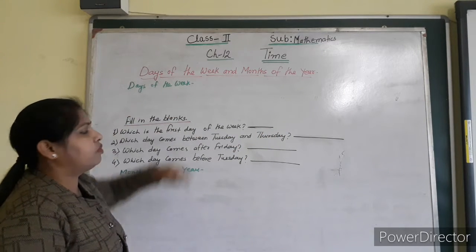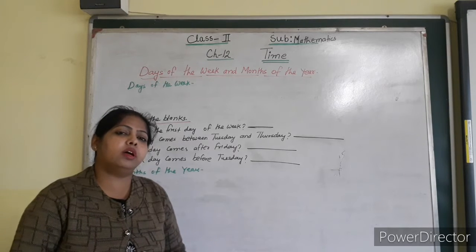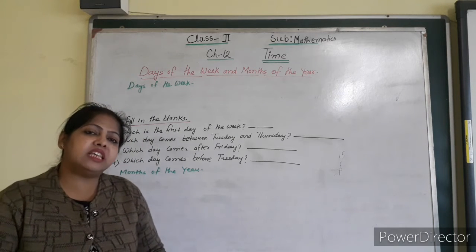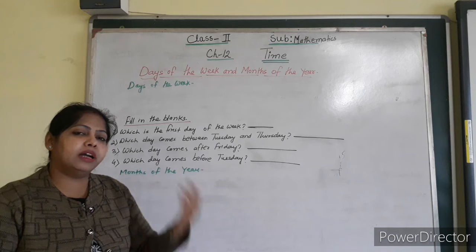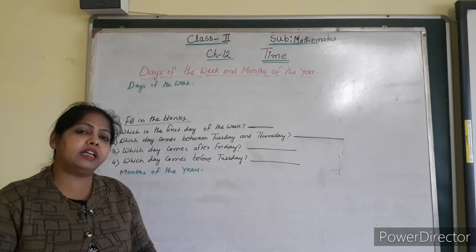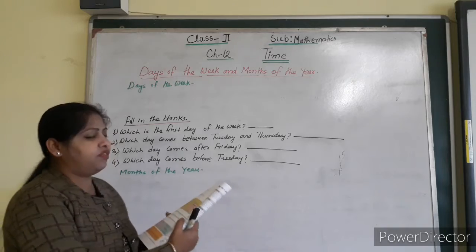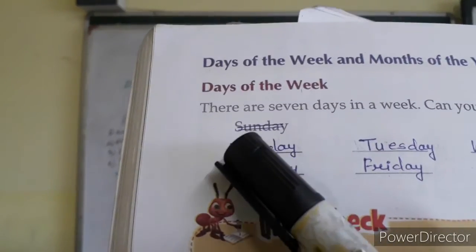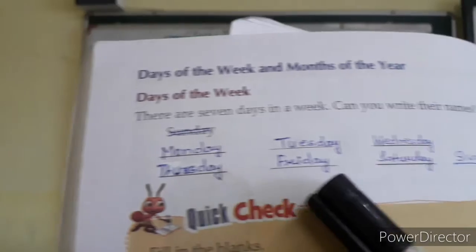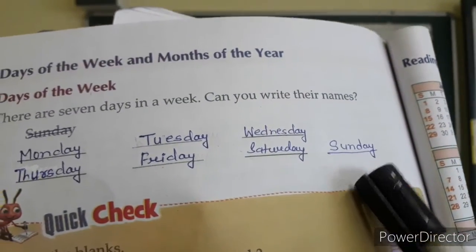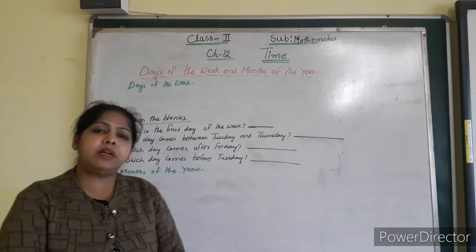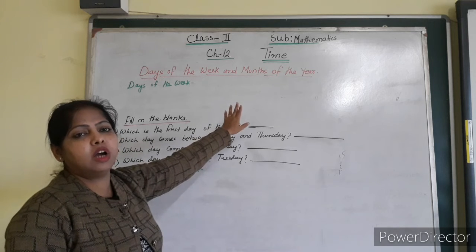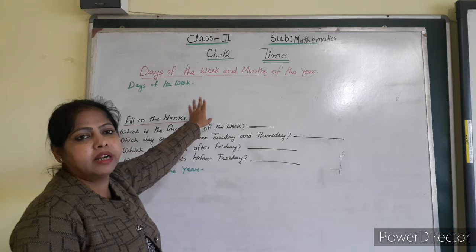The first topic is the days of the week. I want to tell you one thing - there are 7 days in the week. Monday is the first day of the week, but in the book it is written that Sunday is the first day of the week. I have corrected that and written that Sunday is the last day of the week, because it is internationally accepted. You have to write Monday as the first day of the week.